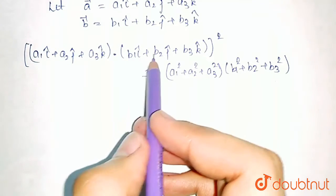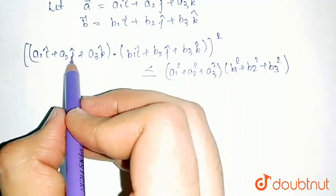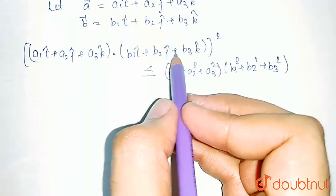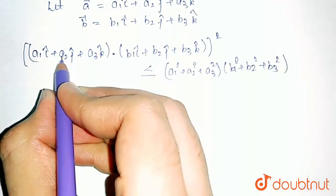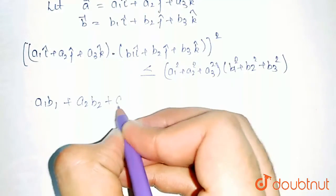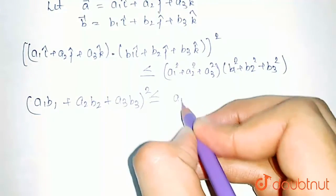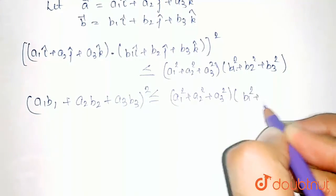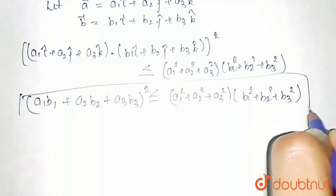Now, in order to calculate this dot product, I will be multiplied with I, J with J, and K with K, because I dot J is 0, I dot K is 0, as I, J, K are mutually perpendicular vectors. So, A1 will be multiplied with B1, A2 with B2, and A3 with B3. So, we get A1B1 plus A2B2 plus A3B3 whole square is less than or equal to A1 squared plus A2 squared plus A3 squared into B1 squared plus B2 squared plus B3 squared. Hence, the second condition is also proved.